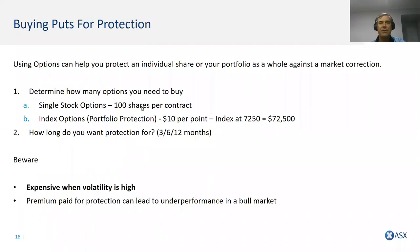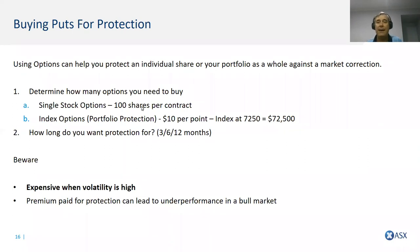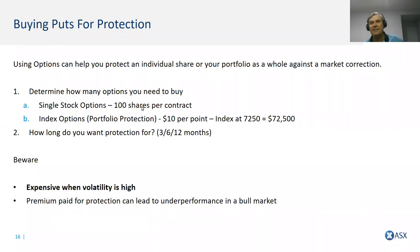Using options, you can protect an individual share or your entire portfolio. For individual shares today, single stock options are 100 shares per contract. For an entire portfolio using index options — if the index is at 7,150, that's $71,500 per index contract. So if you've got a $715,000 portfolio, you need 10 options contracts. There's a calculator on the ASX website that helps with this. With shares it's much simpler: 100 shares per contract, so 1,000 shares means 10 contracts, 10,000 shares means 100 contracts.